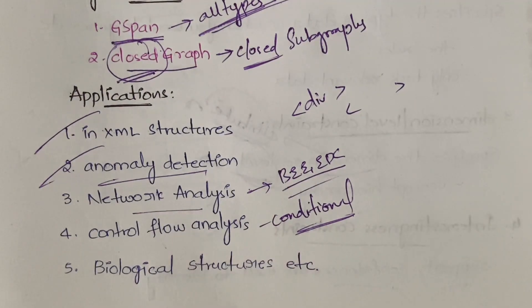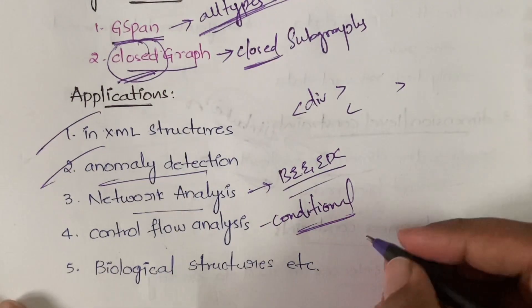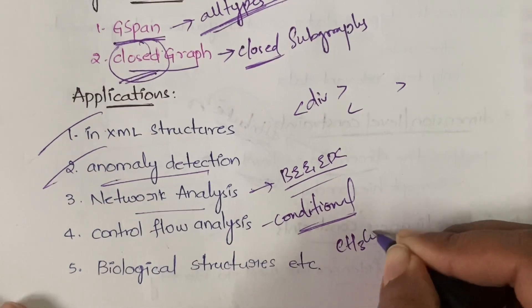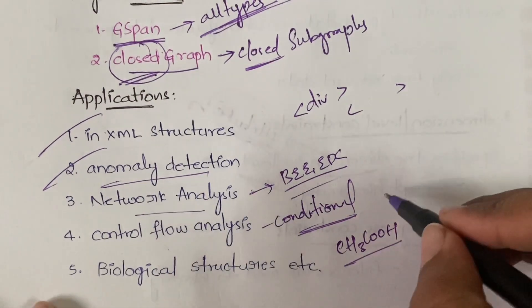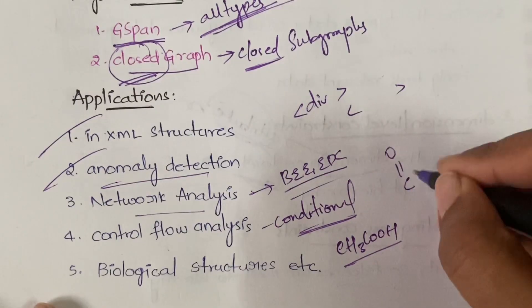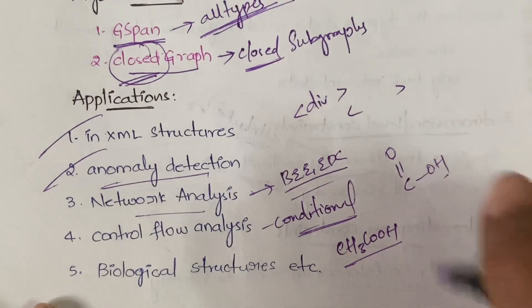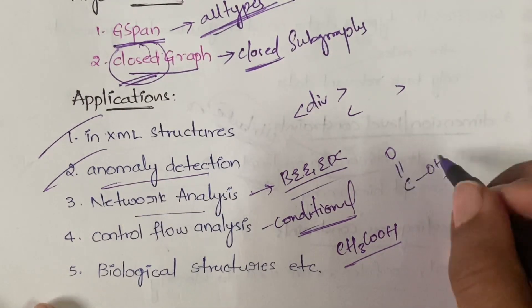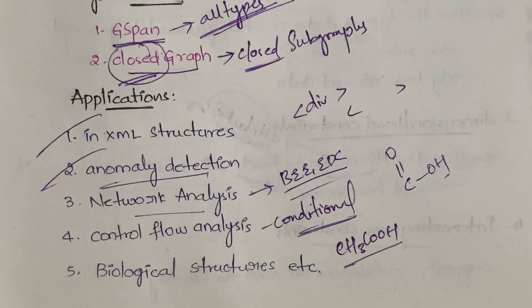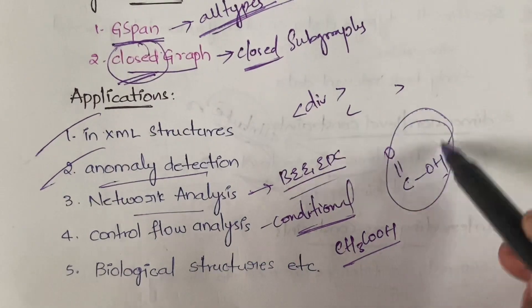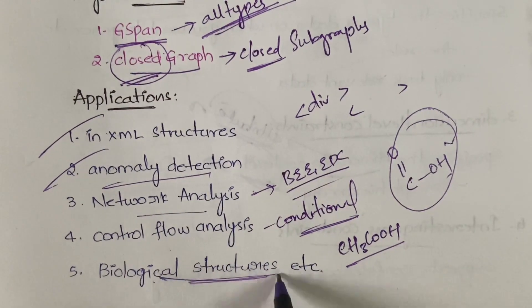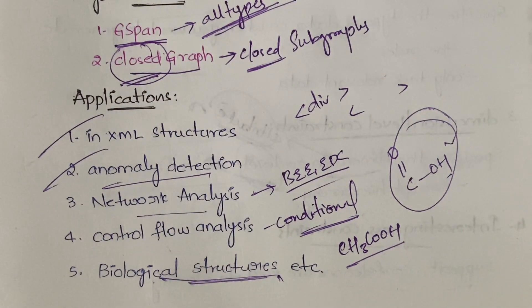Even in biological structures - for example, we have in organic chemistry different structures. Suppose let's take CH3COOH, this is acetic acid. Acetic acid will have different structure - C double bond OH. These structures also you can express through graphs. So these are the applications of graph pattern mining.